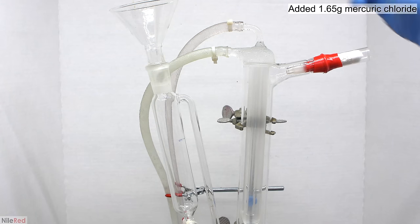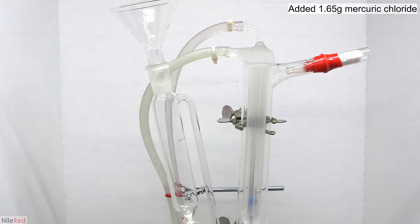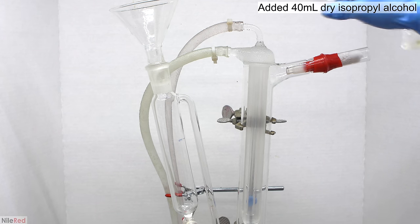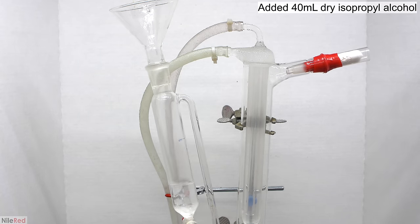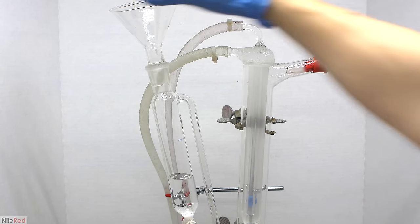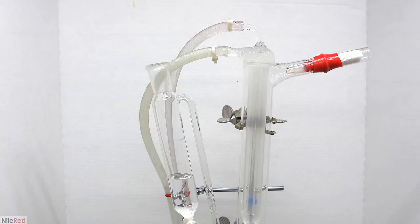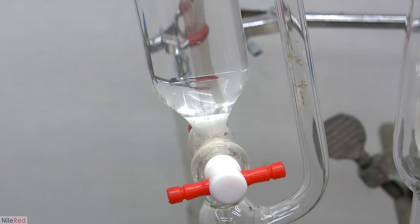While the other things are in the reaction flask, I start to prepare the mercuric chloride solution. I added 1.65 grams of mercuric chloride to an addition funnel, then poured in about 40 milliliters of dry isopropyl alcohol. I moved it around to wash down any mercuric chloride left behind. When we look closer at the addition funnel, a lot of the mercuric chloride still hasn't dissolved. It's not very soluble in isopropyl alcohol, and to get it to dissolve, we're going to have to heat things up.